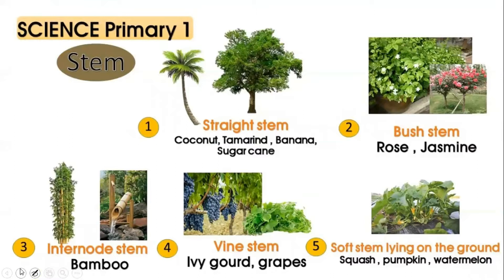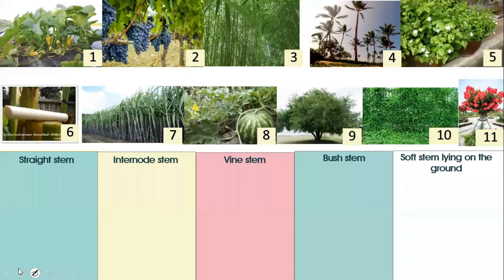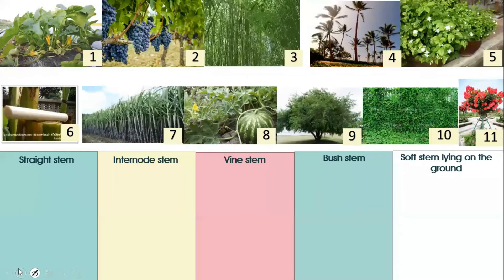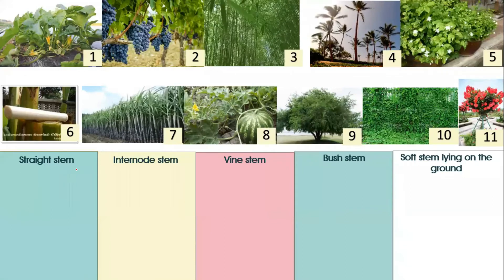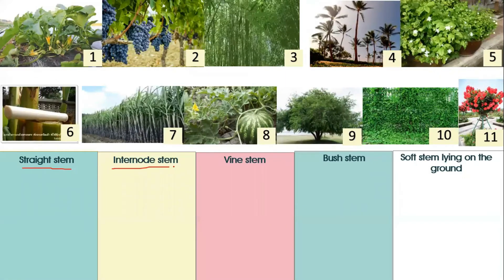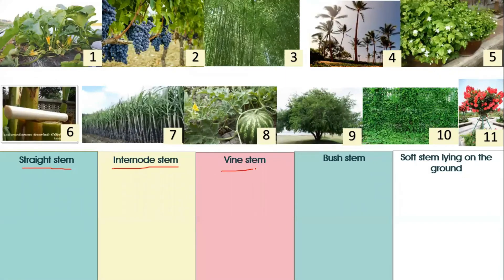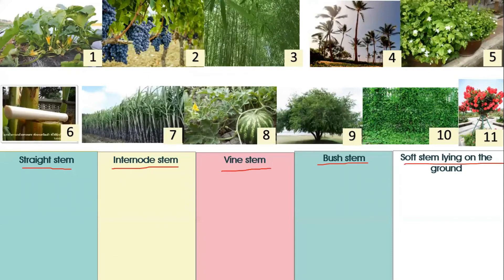There are five characteristics for the stem: stretch stem, butch stem, internal stem, vine stem, and soft stem lying on the ground.